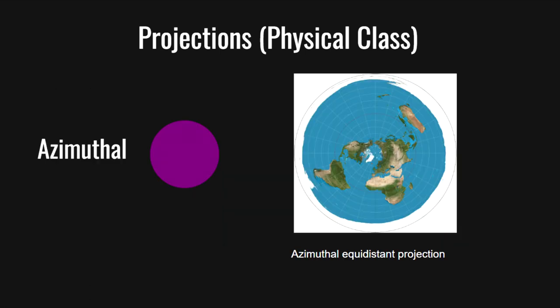Finally, we have azimuthal projections for either polar regions or areas focusing around a single point. For polar regions, we typically focus the projection on the North or South Pole. For example, this projection would be useful if you want to show all the flights departing from a certain location, where we would focus the map on that location.